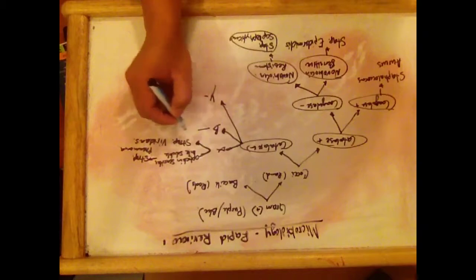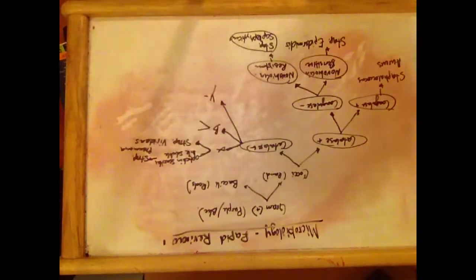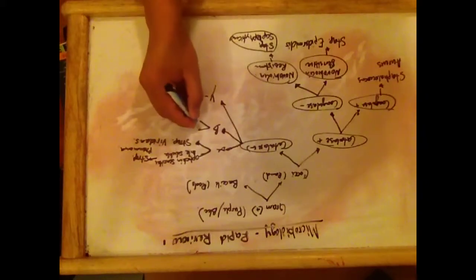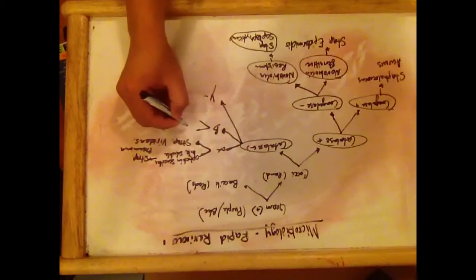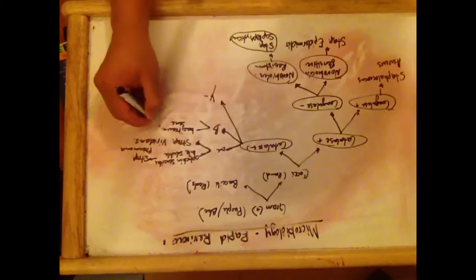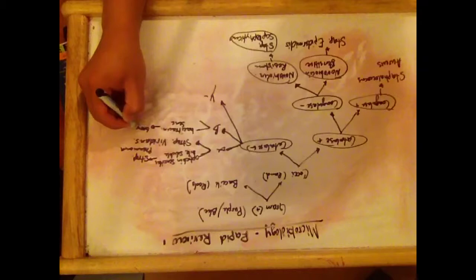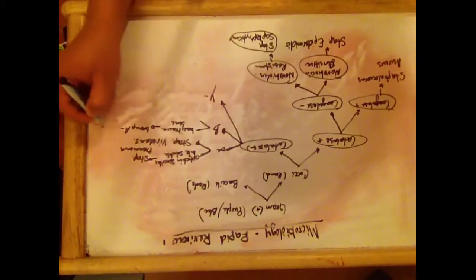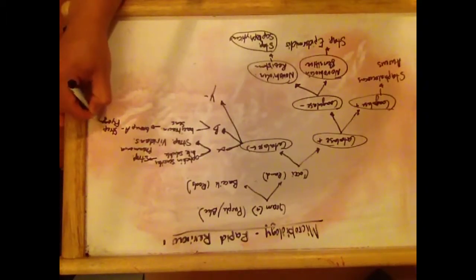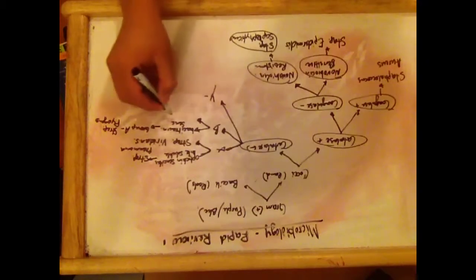For beta-hemolysis, it can either be Group A Streptococcus or Group B Streptococcus. To differentiate between the two, we need to see if they are bacitracin-sensitive or resistant. If they are sensitive, then that's Group A, which is Streptococcus pyogenes. And if they are resistant to bacitracin, that would be Group B.